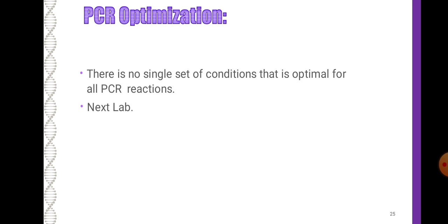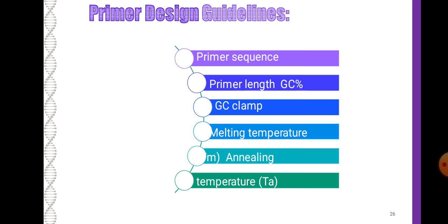PCR optimization: there is no single set of conditions that is optimal for all PCR reactions. Primer design guidelines cover: primer sequence, primer length, GC percent, GC clamp, melting temperature, annealing temperature, and extension temperature.